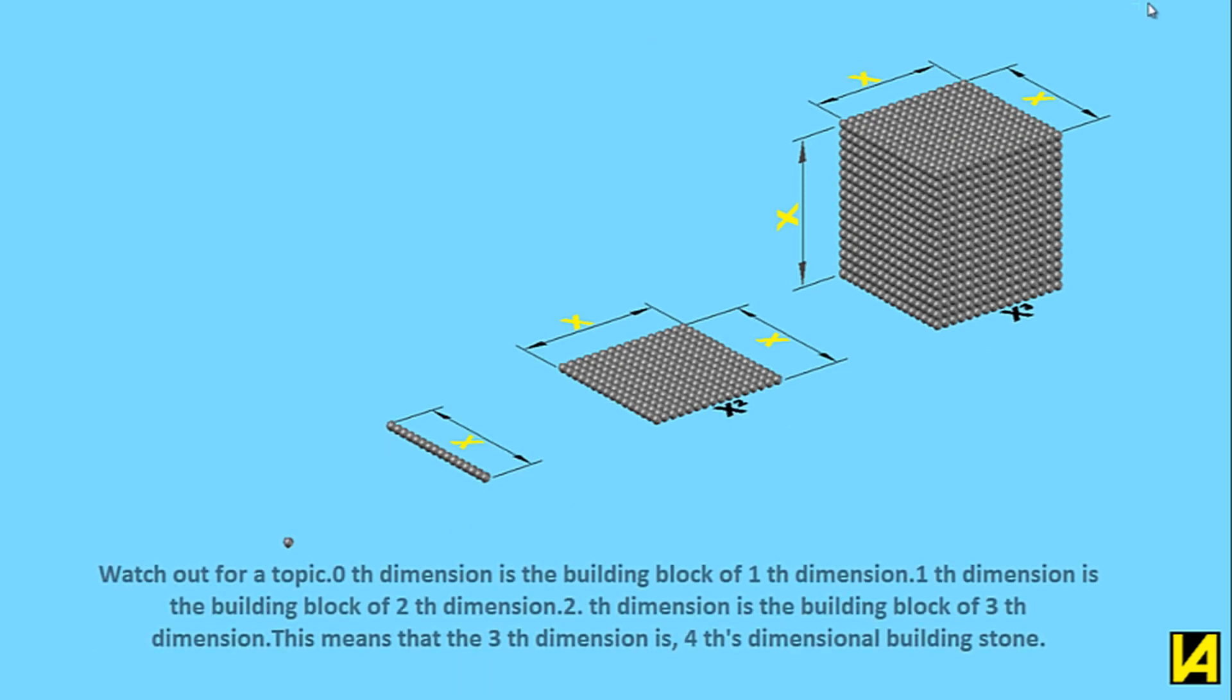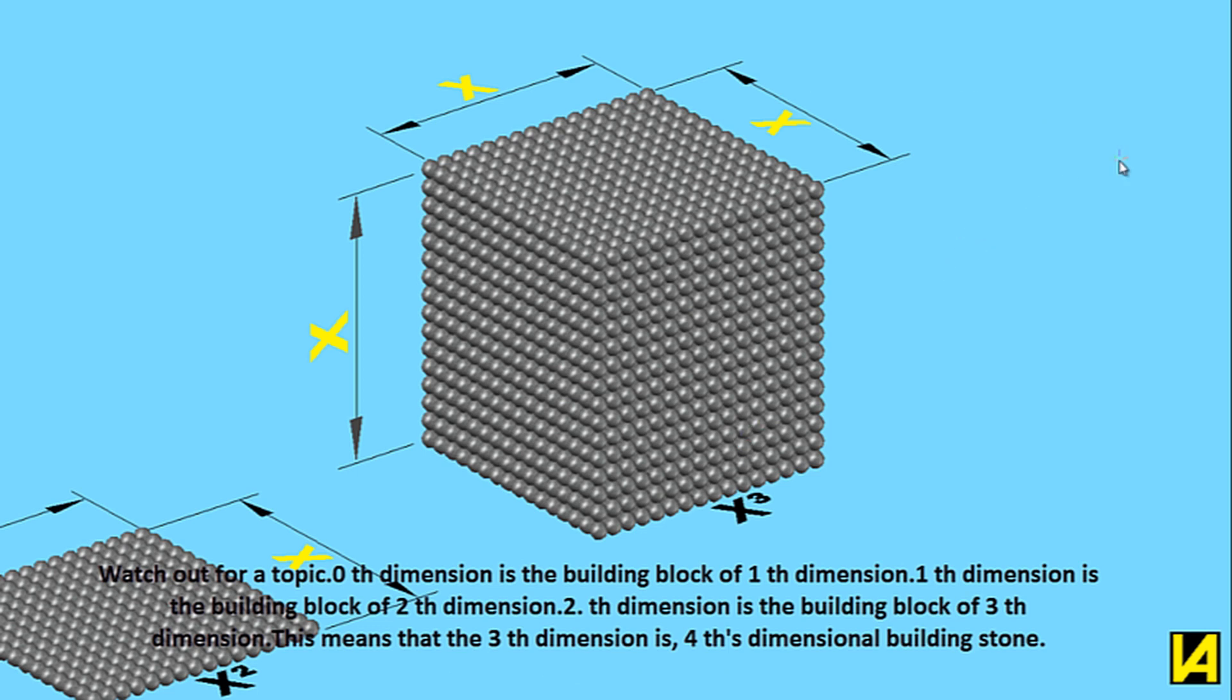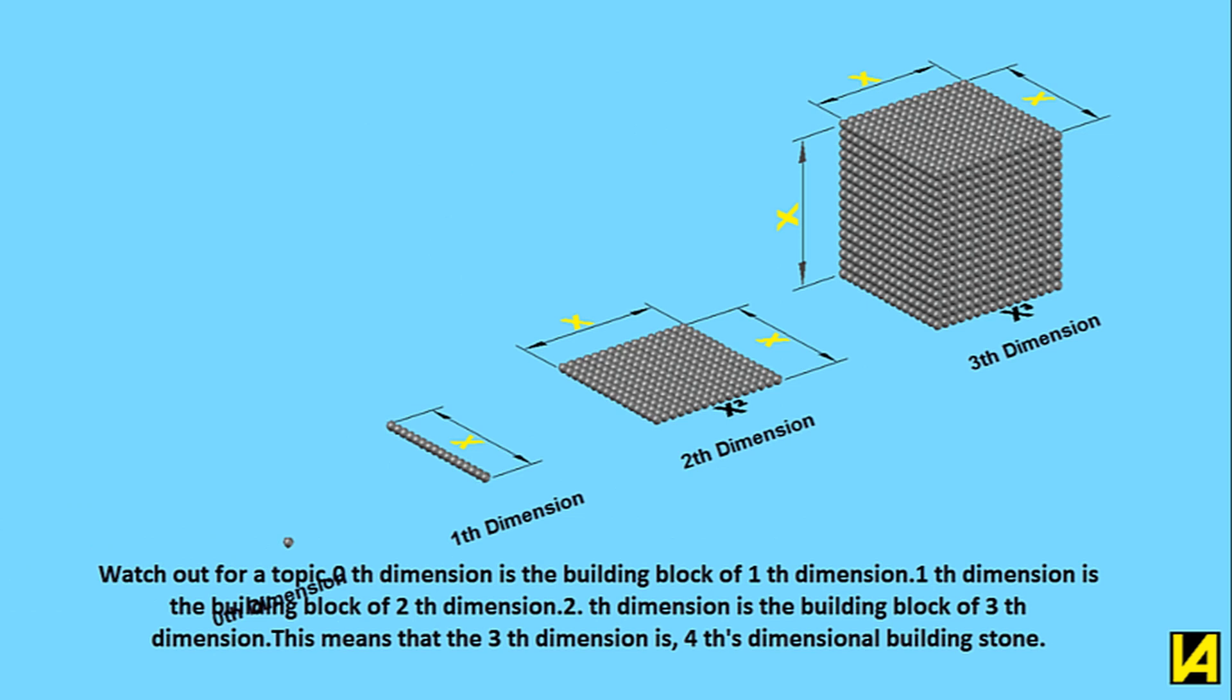Watch out for a topic: the 0th dimension is the building block of 1st dimension. 1st dimension is the building block of 2nd dimension. 2nd dimension is the building block of 3rd dimension.